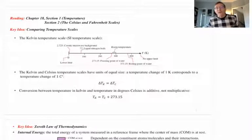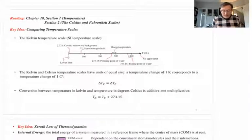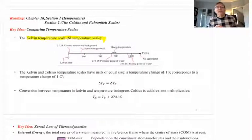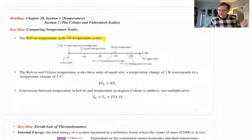For now, let's just say temperature is that thing that's measured by a device called a thermometer. If we are going to measure this property called temperature, we need a unit — that's what a temperature scale means. The most important one is the SI unit of temperature, called the Kelvin temperature scale. Kelvin is the SI unit of temperature.